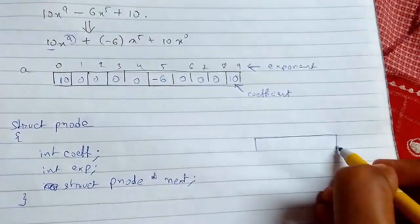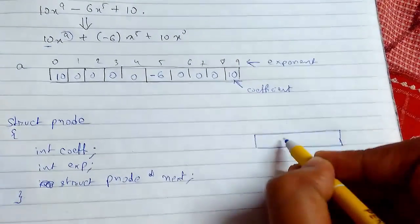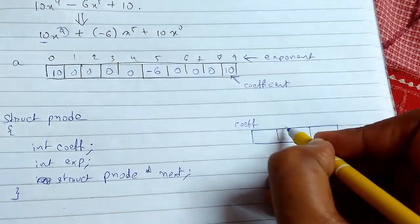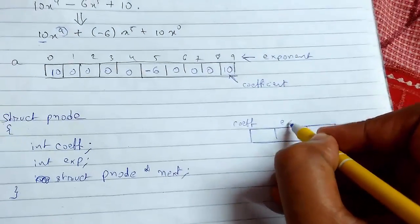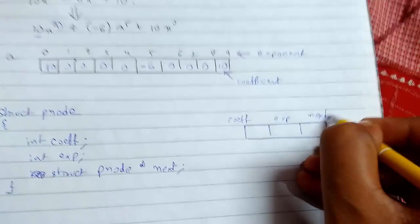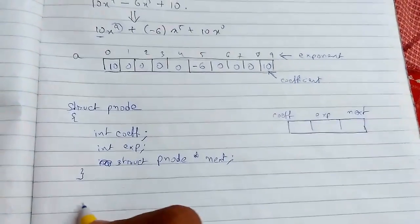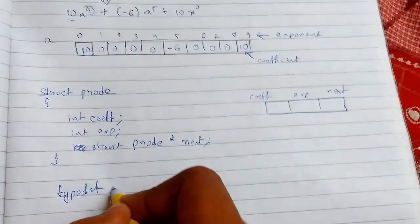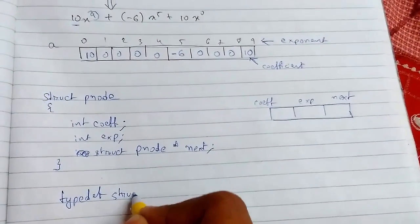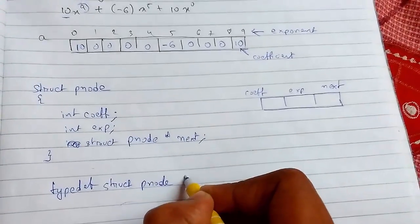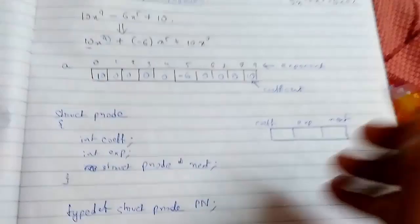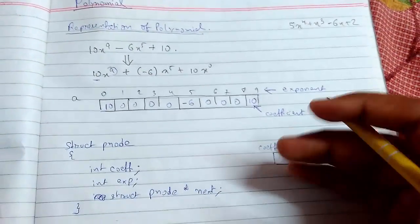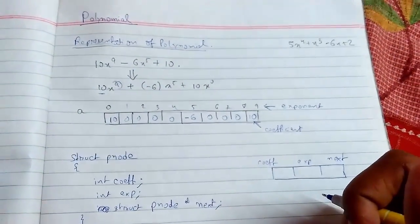So this is how it will look: it will look something like this — these are our three parts. This is the coefficient right here, this is the exponent part, and this is the next part. The typedef will be done like this: typedef struct pnode, this will be pn. So this was the introductory part of the polynomial. In the next video I will be showing some operations on it. Thanks for watching!